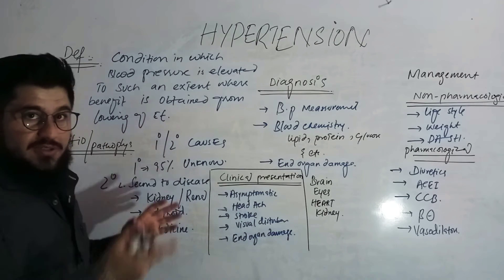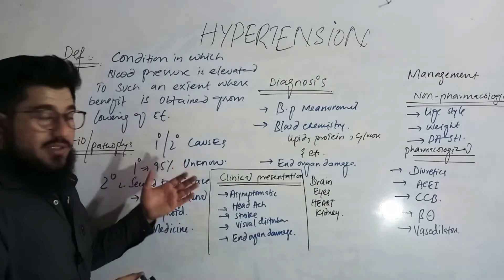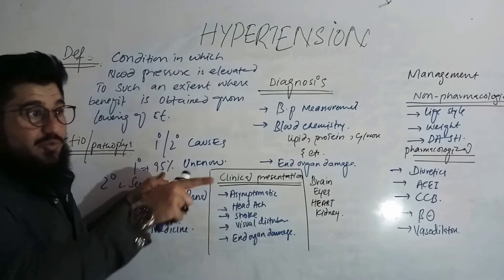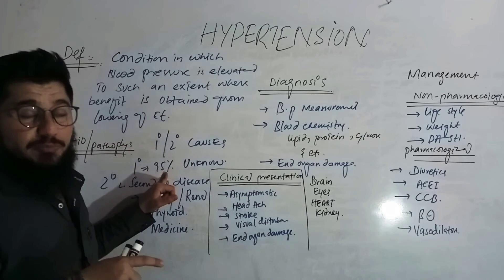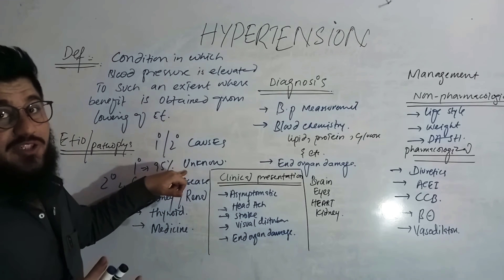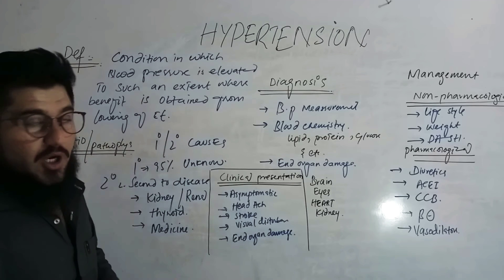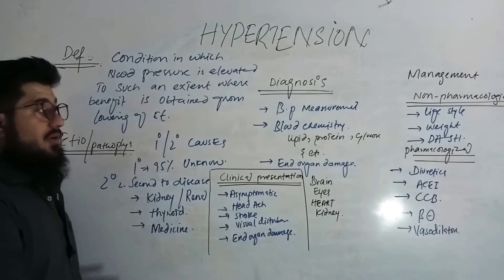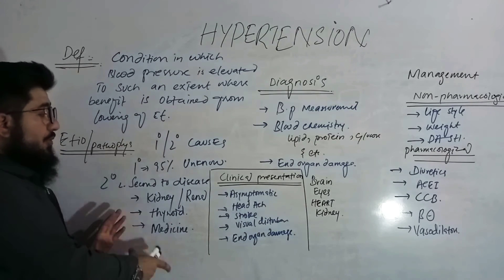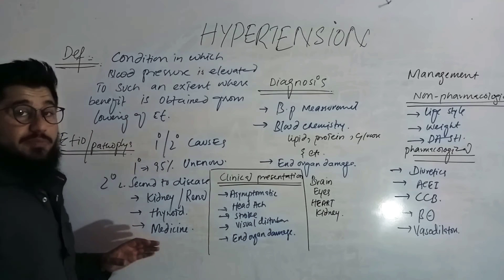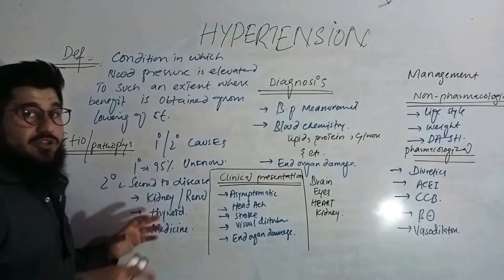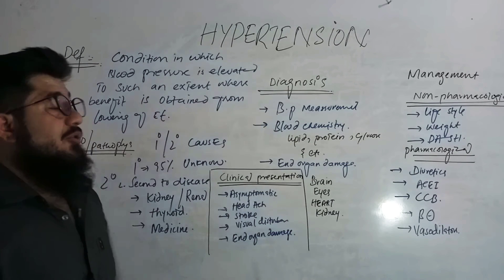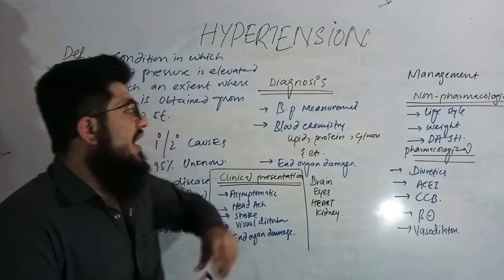So we have two types: primary, with unknown cause, comprising most cases; and secondary, with identifiable causes such as kidney problems, thyroid problems, and medicine-induced hypertension. Detailed lectures are available for each topic. Coming to diagnosis — how to diagnose is very simple: we measure the blood pressure.